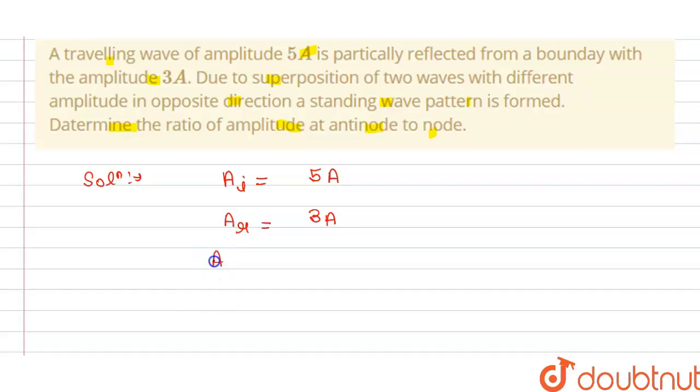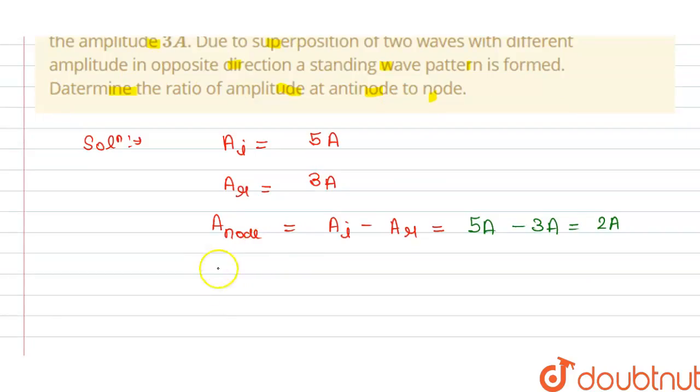And we know that amplitude of the node is equals to amplitude of incident minus amplitude of reflected. So this will equals to 5A minus 3A, that is equals to 2A.